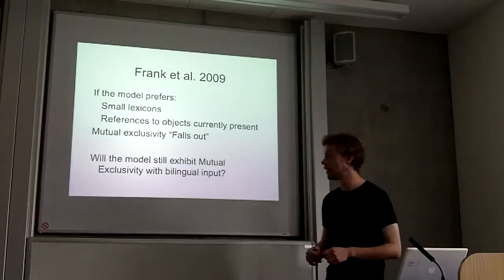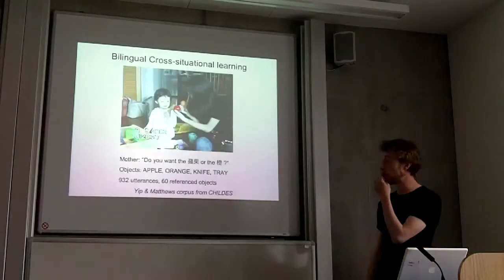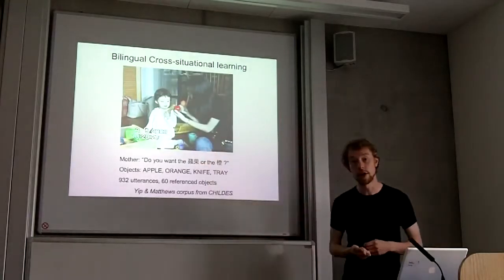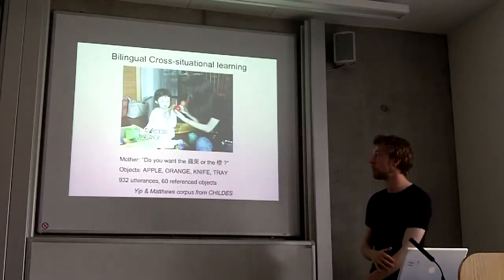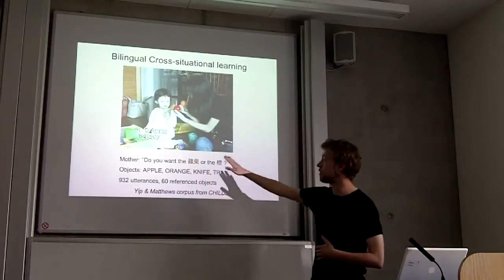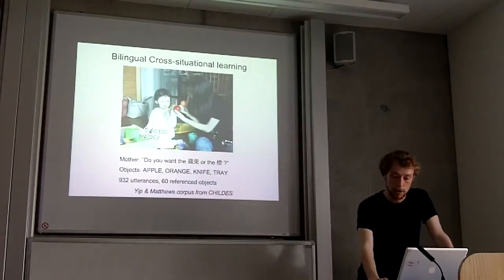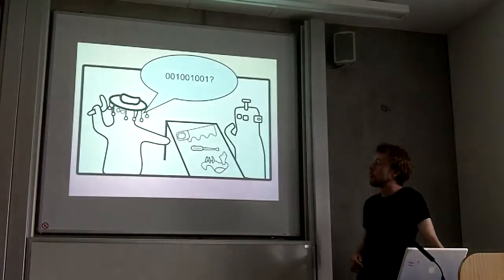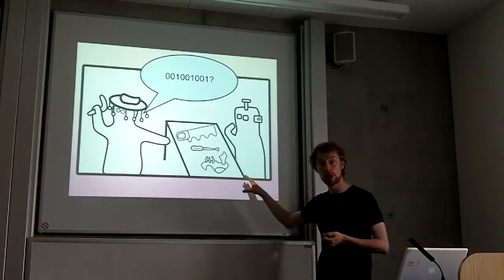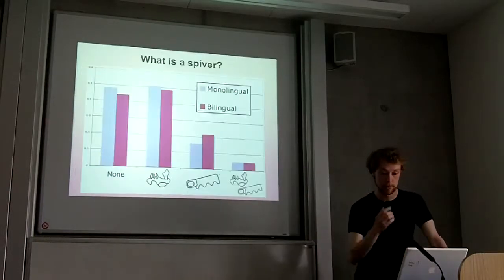What I was interested in was whether it would still exhibit mutual exclusivity if I gave it a bilingual input. So I got a bilingual video corpus. It's difficult to find one that matches exactly, because there are very few bilingual video corpora. But this is one in English and Cantonese, and the mother is saying 'do you want the apple or the banana?' What we can do now is train the model on the monolingual and the bilingual corpus, and then put it in this situation and see how it would behave — what does it think the spiver is?